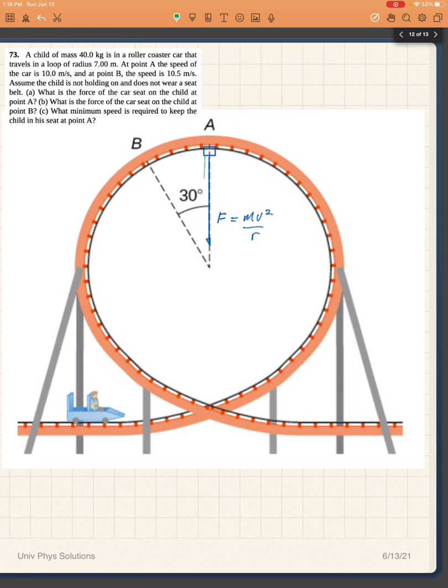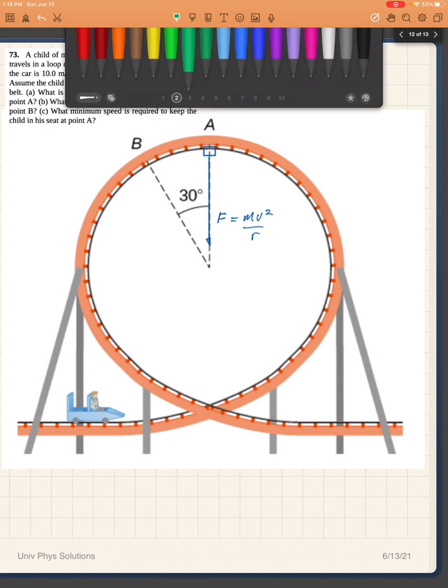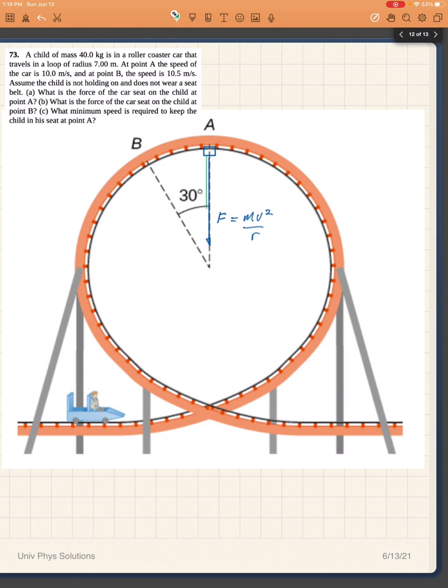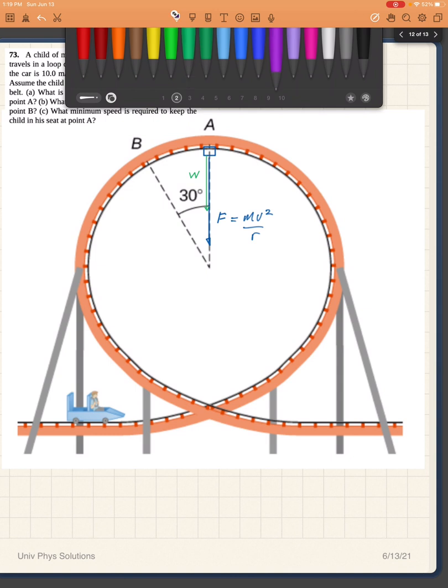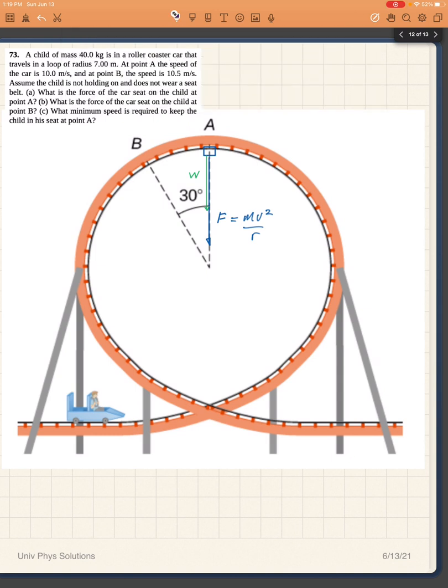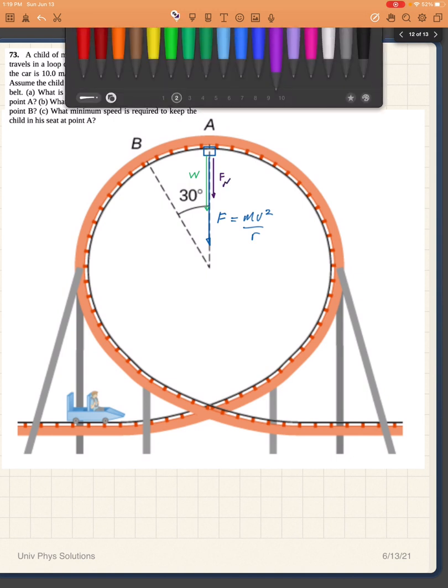Now that centripetal force is going to be made up of two parts. One of them is going to be the force due to gravity, which is its weight, and the other portion is going to be the normal force, which is the force of the seat.